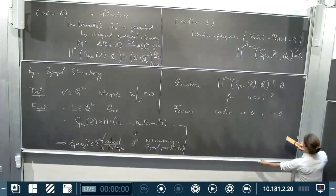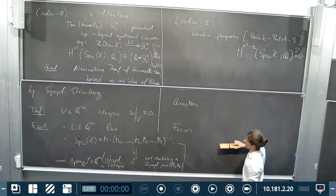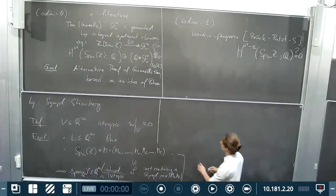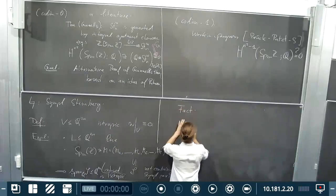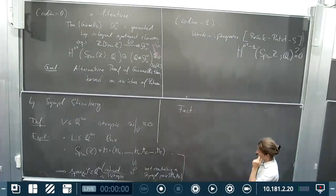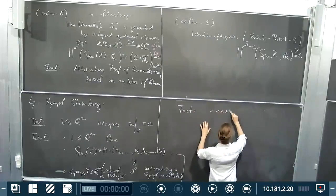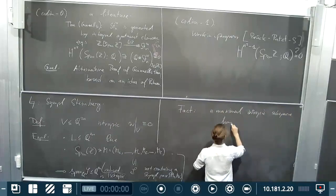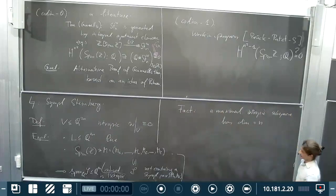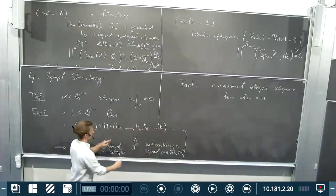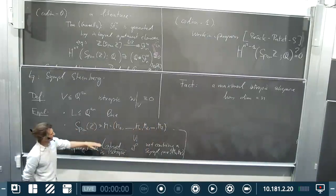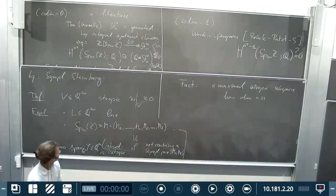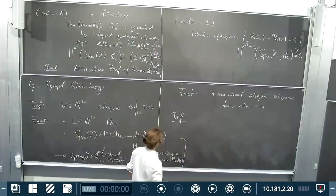We can ask: what is the dimension of a maximal isotropic subspace? As a fact, a maximal isotropic subspace has dimension n. In particular, if I take the first n basis vectors of a symplectic matrix, the subspace they span is an example of a maximal isotropic subspace. These are often called Lagrangians in the literature. With this, we can turn to the definition of the symplectic Tits building.